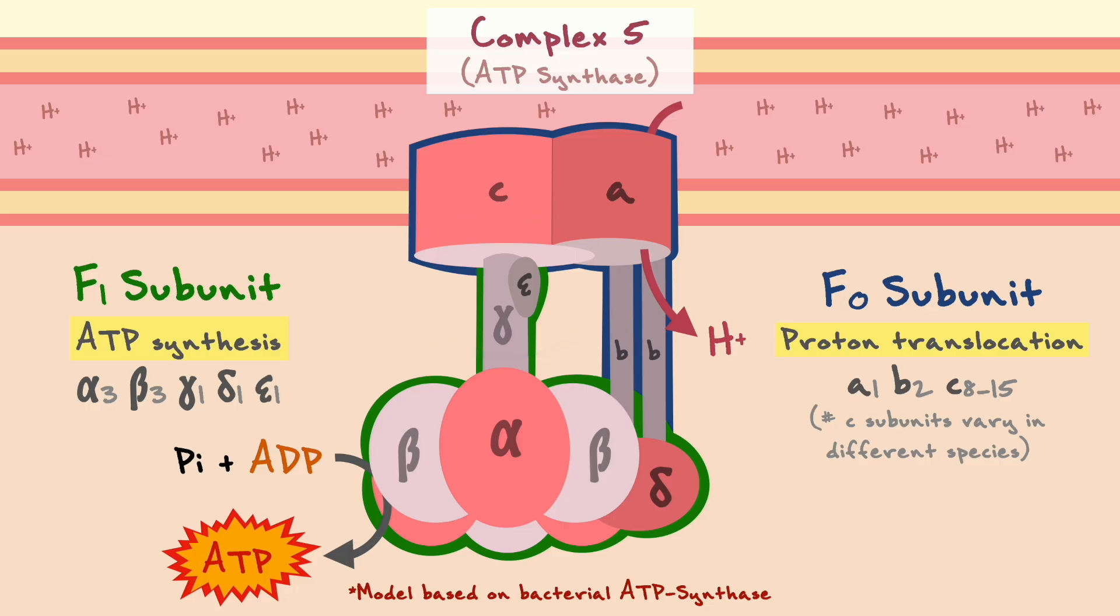The beta subunits, which again catalyze the formation of ATP, can be in different conformations that will allow or not allow the synthesis to happen, and these conformations are decided by the position of the gamma subunit. In order for the rotation of the gamma stalk to have the proper effects on the beta subunits, the entire complex of beta and alpha subunits must stay fixed in place. This is accomplished by the help of the delta and the two B subunits.